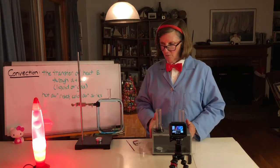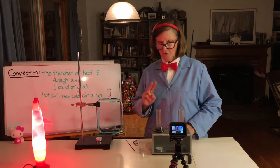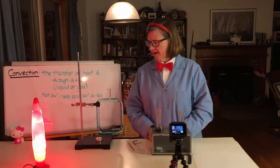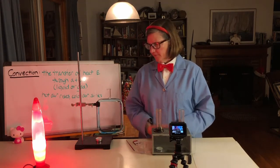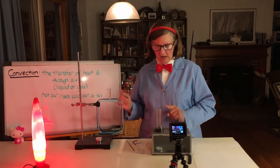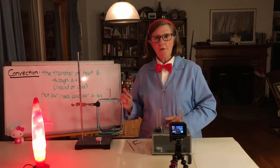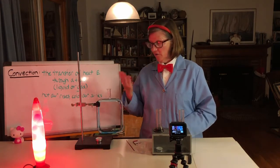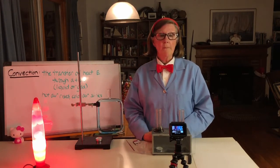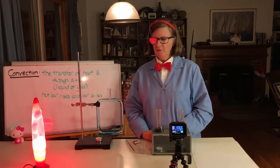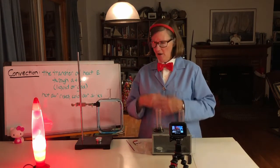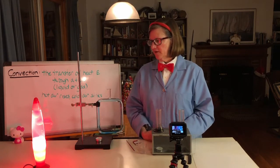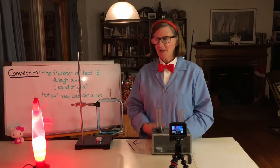So the convection tube shows you a convection current in a liquid, and the convection box can show you a convection current with a gas. There's an assignment attached to Google Classroom and it asks you to describe your observations and explain how one or the other, you get to pick which one you want to explain, demonstrates a convection current. You can either pick the tube or the box, but you don't have to do both. In fact, you shouldn't do both, that's too much work. Just pick one and explain, describe what you saw and then explain how it shows a convection current.